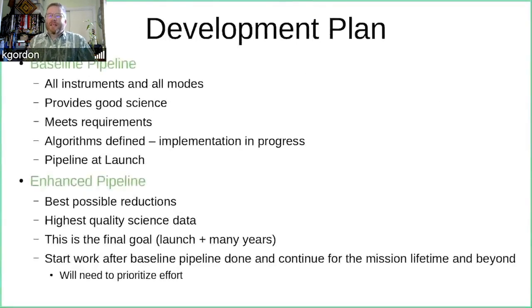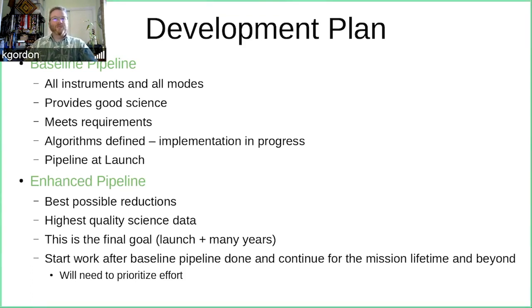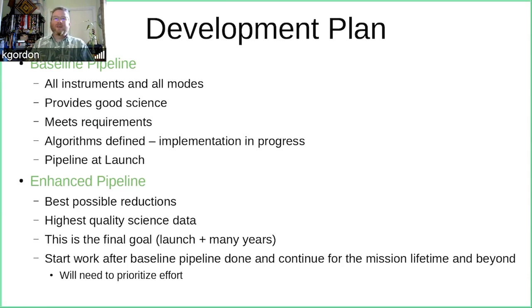To make the development plan manageable, we split it into two phases. First is the baseline pipeline — the idea was we need to get something for all instruments in all modes by launch. We want to provide good science for all instruments and all modes. It doesn't mean it's optimal for science, but we want to support as much as we can, and of course we had requirements we needed to meet.